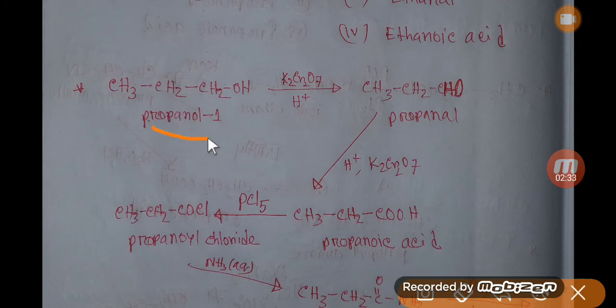Well, propanol - this is propanol. If you add here potassium dichromate and sulfuric acid, at first you will get propanol, which will be oxidized by the same reagent to propanoic acid. This is our basic compound for degrading carbon.